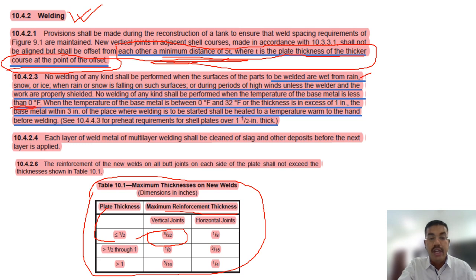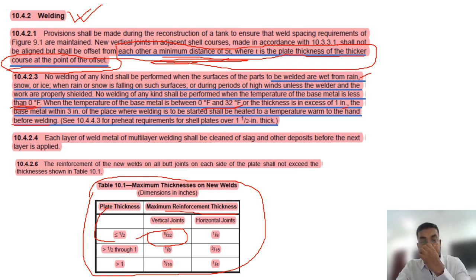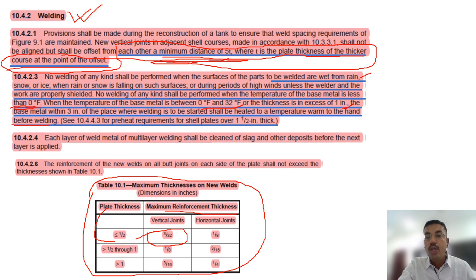When the temperature of the base metal is between zero and 32 degrees Fahrenheit, or the thickness is in excess of one inch, the base metal within three inches of the place where welding is to start shall be heated to a temperature warm to the hand before welding. This is again a close-book requirement. Preheating three inches on both sides of the weld is required to remove moisture.